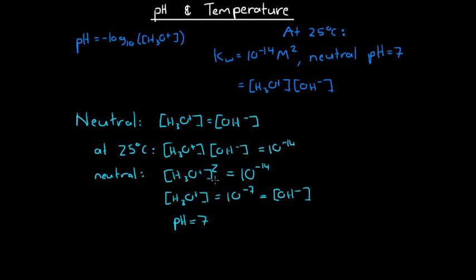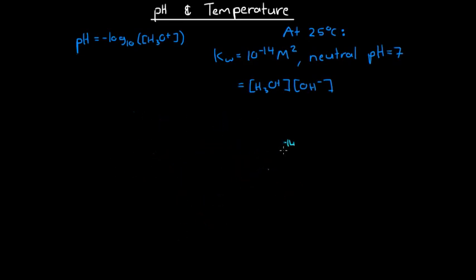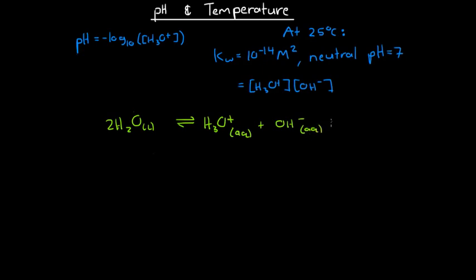Now, how does temperature affect this pH? To understand how temperature affects pH, we need to look at the self-ionization of water. This reaction has a chemical equation where two molecules of water produce a hydronium ion and a hydroxide ion. It so happens that this reaction has a positive change in enthalpy and is therefore endothermic.